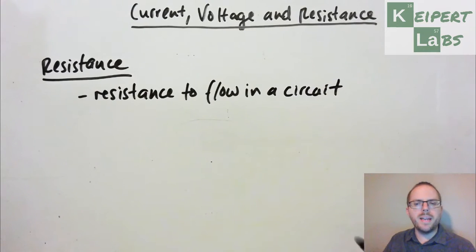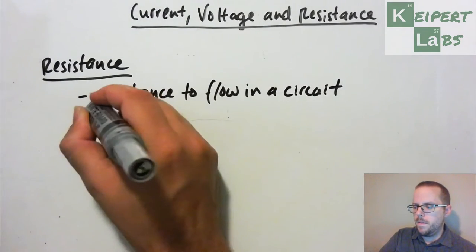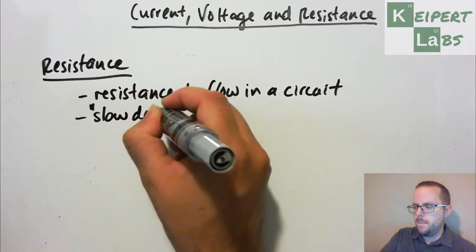So when we're thinking about current that's flowing around a circuit and how much that flow is, and when thinking about the voltage, that is how much energy that that is transferring, that there are things in the circuit which slow the current down.